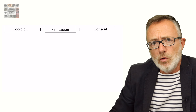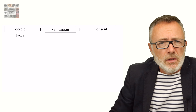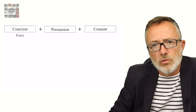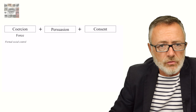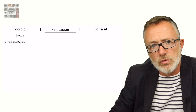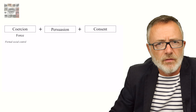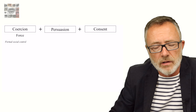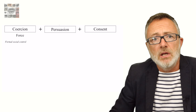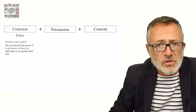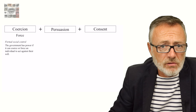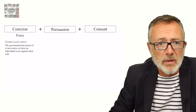Firstly, coercion or force. This is the most obvious way the state controls individual action. It's what sociologists call formal social control. It was Max Weber who first said that states are best understood as institutions that have a monopoly of the legitimate use of violence. The state and its government has power; it can coerce or force an individual to act against their will. Nothing and nobody else can legitimately use force against you — that's what Weber meant.